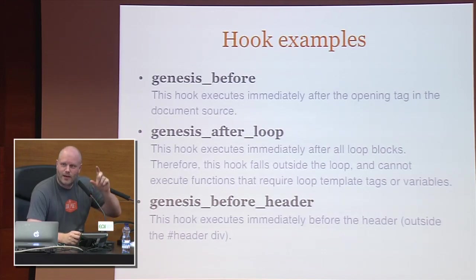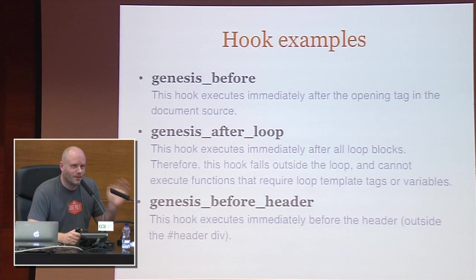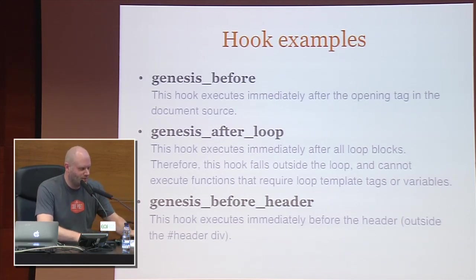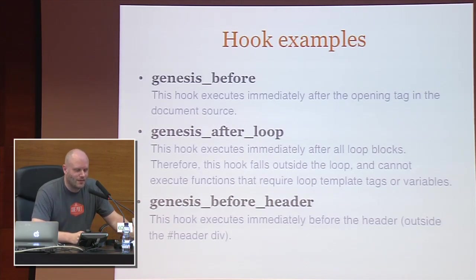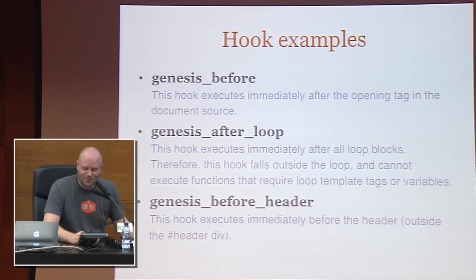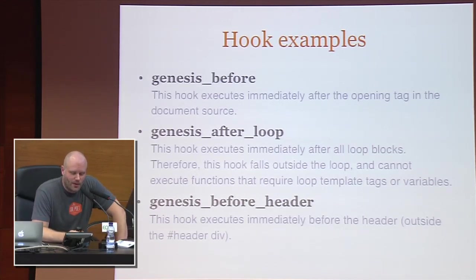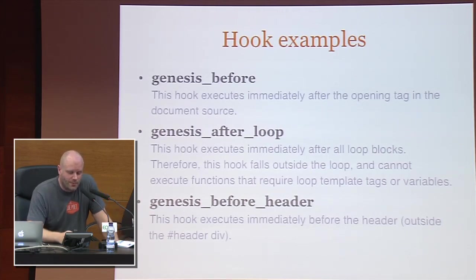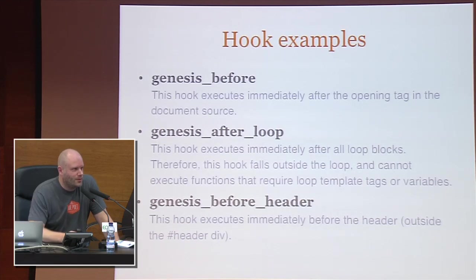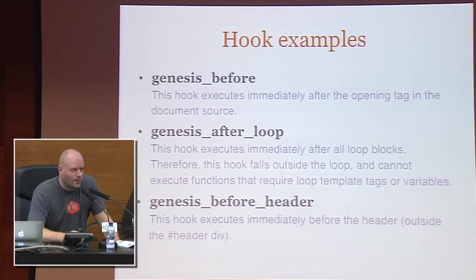You probably know that in your header you have 'wp_head' — that's why you add stuff like Google Analytics. 'genesis_before' is what it says: this hook executes immediately after the opening HTML tag in the document source, right after the HTML declaration — that's where you can add stuff. 'genesis_after_loop' is right after the loop, a place you can use if you need to output code or change something there. And 'genesis_before_header' — as I gave you that example earlier — when you want to move the navigation up, that's the hook you'd use.